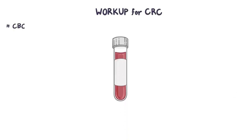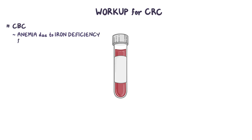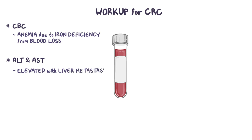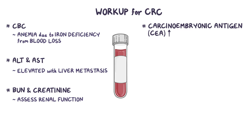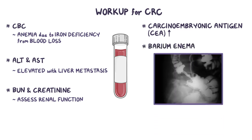The workup for CRC includes a CBC, which can show anemia due to iron deficiency from blood loss, an ALT and AST which may be elevated if there is liver metastasis, and a BUN and creatinine to assess renal function because a large tumor can compress the ureters and cause renal impairment. The tumor marker carcinoembryonic antigen, or CEA, is often elevated in CRC. A barium enema can be useful as well, where a liquid is injected into the rectum and an X-ray is taken. Classically, colorectal cancer will show an apple core sign, which shows constriction of the lumen, most often in the descending colon.